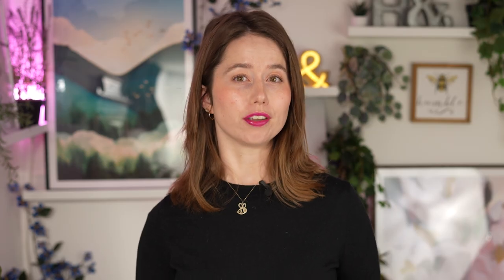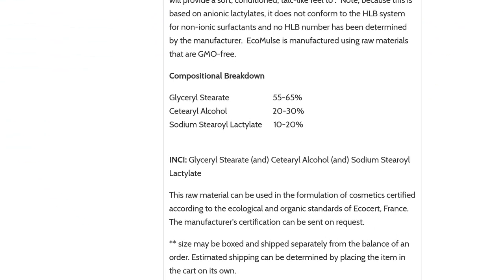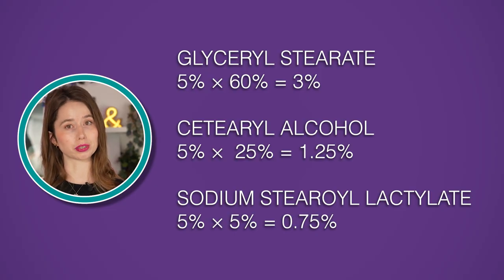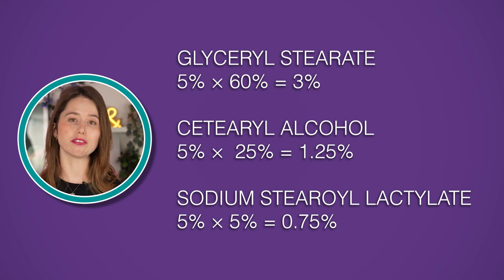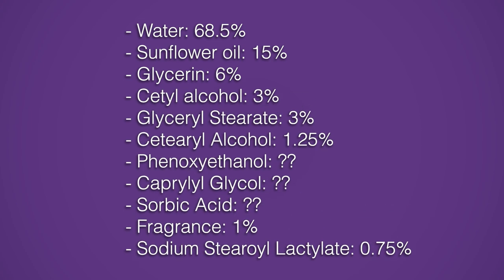So here's what needs to happen: you've got to figure out how much of each ingredient's ingredient is in the overall formulation. Clear as mud? Don't worry, it's less complicated than it seems. Let's use the Redemulce SCG as an example. Redemulce SCG is approximately 55–65% glyceryl stearate, 20–30% cetearyl alcohol, and 10–20% sodium stearoyl lactylate. If we take the middle of each range, that's 60%, 25%, and 15%, and that all adds up to 100%. Since the overall formulation contains 5% Redemulce SCG, that breaks down to 3% glyceryl stearate, 1.25% cetearyl alcohol, and 0.75% sodium stearoyl lactylate. With those values, we can now rearrange the ingredient list into descending order.